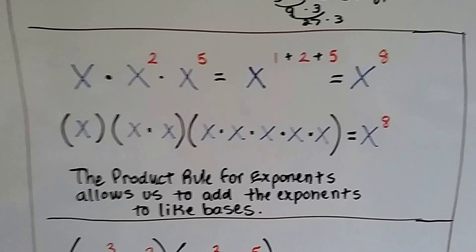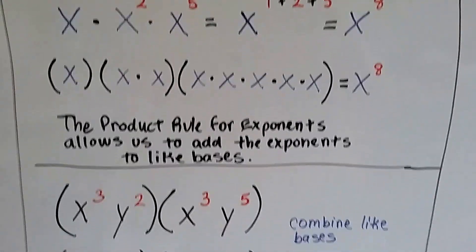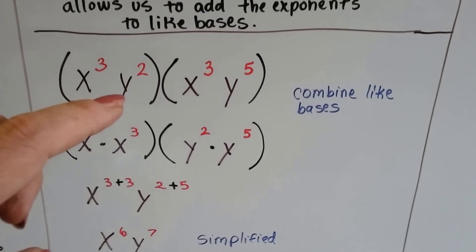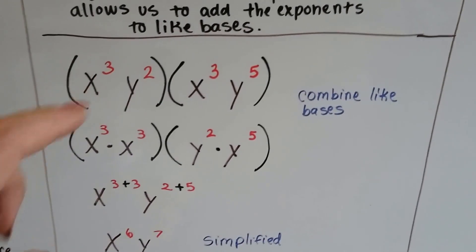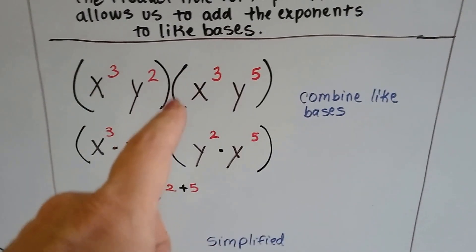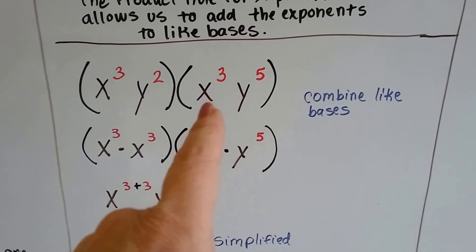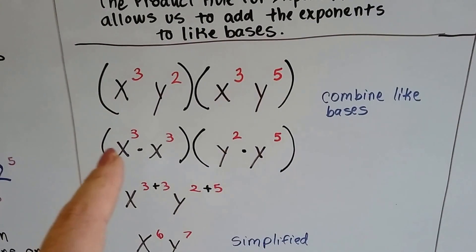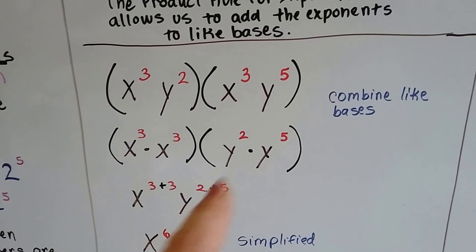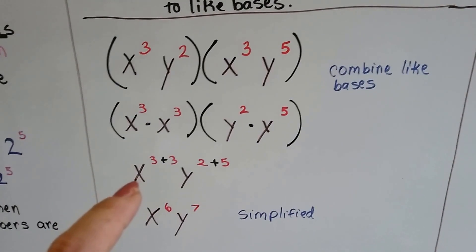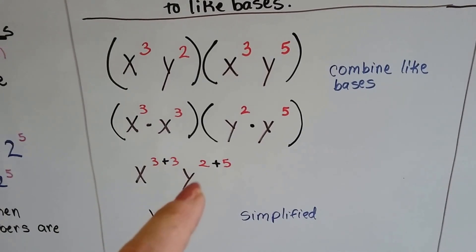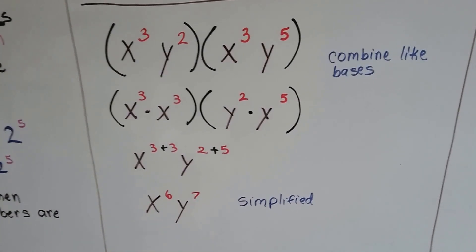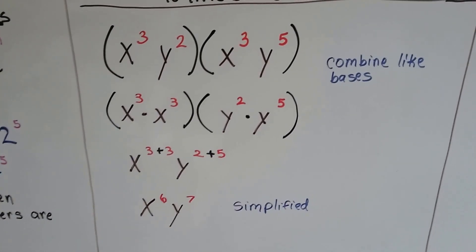The product rule for exponents allows us to add the exponents of like bases. Now with parentheses, we've got x to the third power multiplied by y to the second, and then another set with x to the third power and y to the fifth power. We combine the like bases — rearranging so the x's are together and the y's are together. We get x to the third plus third power and y to the second plus fifth power, which simplifies to x to the sixth power and y to the seventh power.